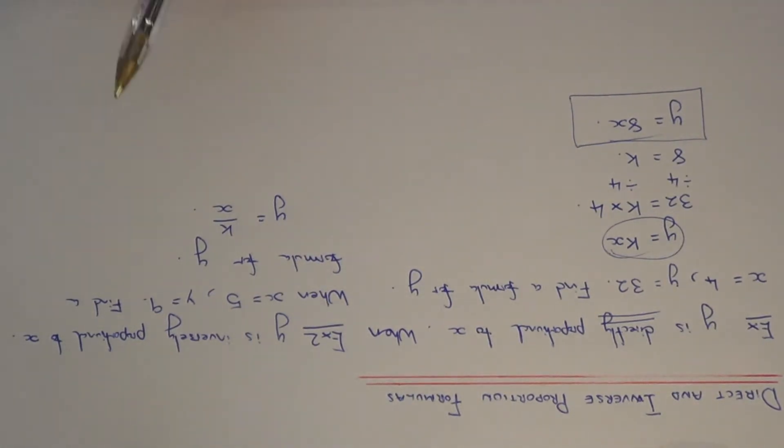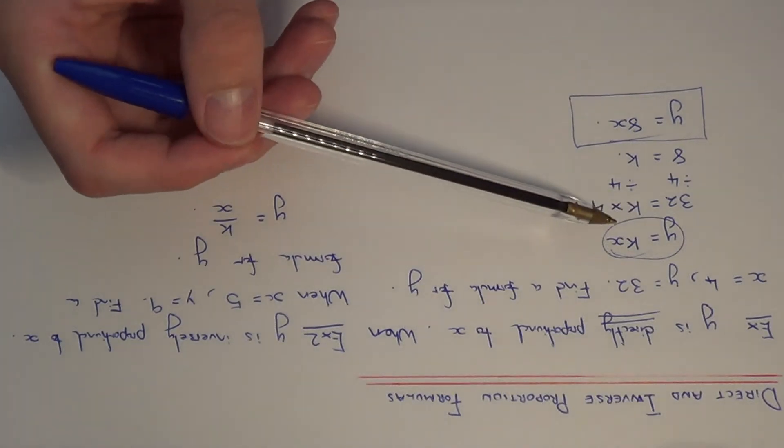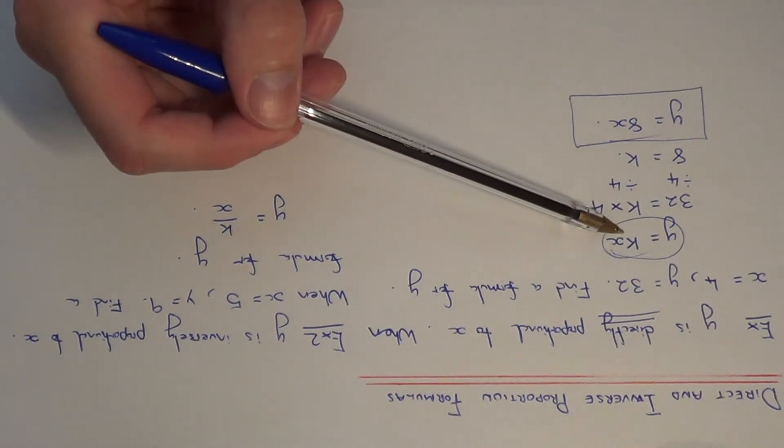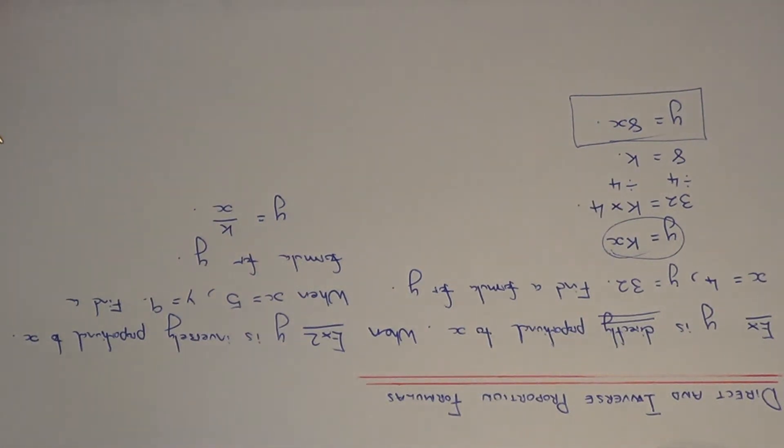This is the main difference between direct and inverse proportion. When it's inverse proportion you do a divide, and when it's direct it's a multiplication. Once we've done this, we just need to substitute in the two numbers in the question to work out the value of k.